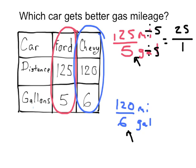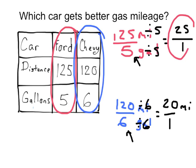The Chevy, I need to divide by 6 because 6 divided by 6 is 1. And I do that to the numerator as well. 120 divided by 6 is 20 miles per gallon. So which one will get you better gas mileage? Hopefully you can tell that the Ford will get you better gas mileage because you're going to get 25 miles in one gallon, which is better than only getting 20 miles in one gallon.